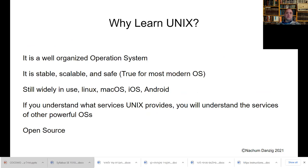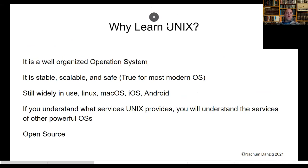Why learn Unix? Unix is a well-organized operating system. It's easy to use, stable, and scalable — scalable means that as I add more memory or resources, it will actually improve. It is safe, meaning my files can't be accessed by your files unless I let you. Linux uses a Unix-type system, Mac OS uses a Unix system, and iOS and Android are also based on Unix, so it's still very much in use.